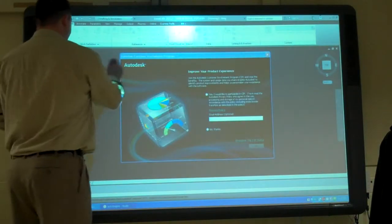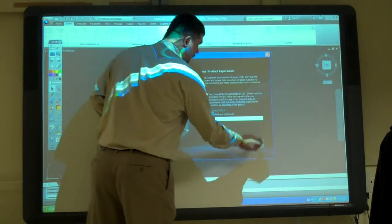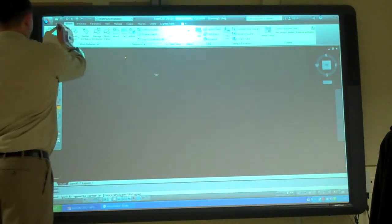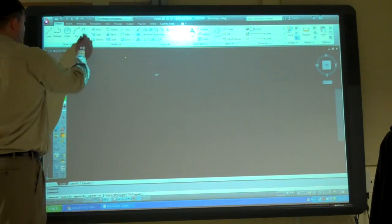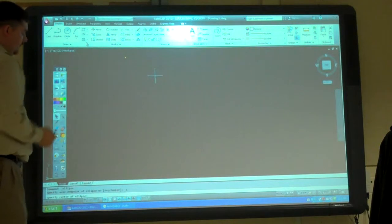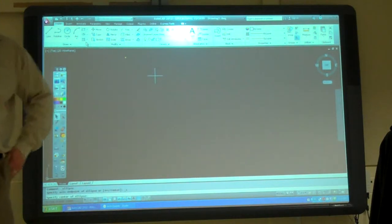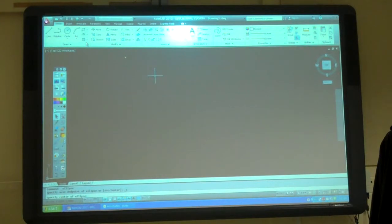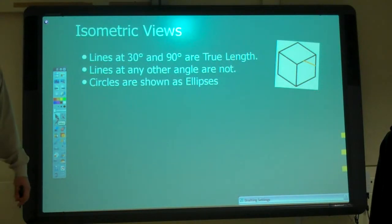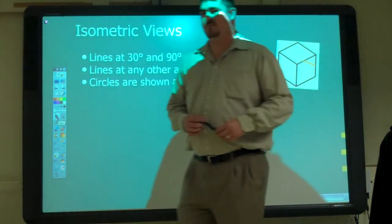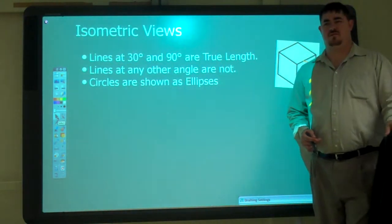If I go to AutoCAD, I go Home, Ellipse. Even if I click there, there's no option for isocircle. It wasn't selected. We have to do something to get it to show up. Anyone know what that is? I forgot. Type in isocircle?